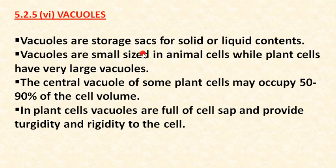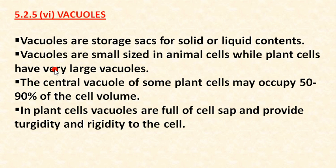Another cell organelle is the vacuole. Vacuoles are storage sacs — bag-like structures — for solid or liquid content. Vacuoles are small in animal cells, while plant cells have very large vacuoles. This difference in size between animal and plant cell vacuoles is important.